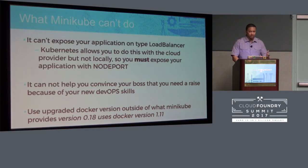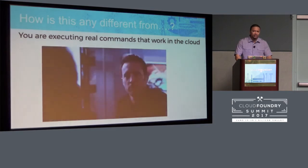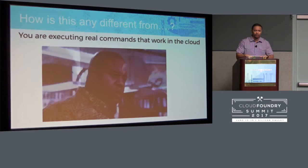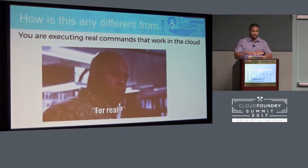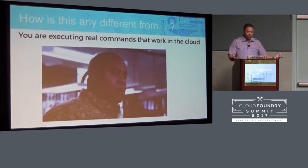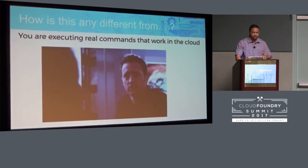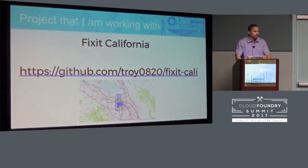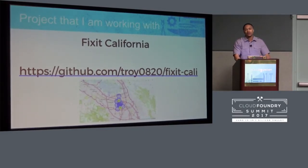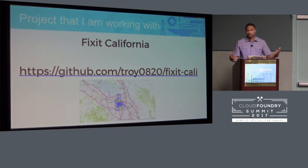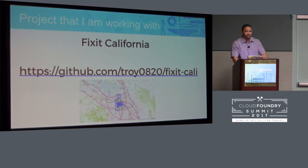People ask how Minikube is different from Docker Compose. Docker Compose spins up your dev environment locally so you don't need the other person who wrote the microservice you depend on. But if you want to do production-style things like blue-green deployments, you're not going to Docker Compose on a cluster. You want to use real Kubernetes commands. The project I'm working with is called 'Fix California' — it hits an API and shows reported issues on a map.